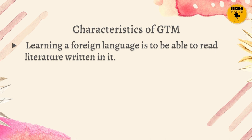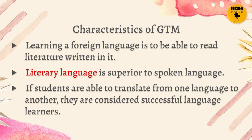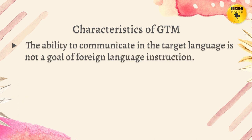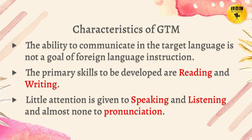Learning a foreign language is to be able to read literature written in it. In olden days, the literature was based on classical languages, so that was the primary objective for learners of a foreign language. Literary language is considered superior to spoken language. If students are able to translate from one language to another, they are considered successful language learners. The ability to communicate in the target language is not a goal. The primary skills to be developed are reading and writing, with little attention given to speaking, listening, and almost none to pronunciation.